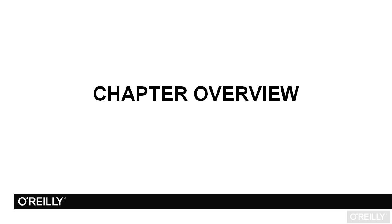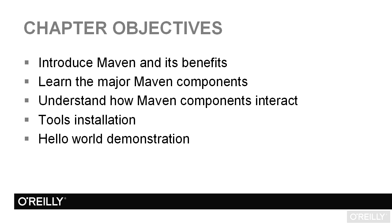Let's talk about what we're going to cover in this chapter. As you would expect, this is an introductory chapter to Maven, so we're going to be looking at some high-level concepts surrounding the tool. The first objective is to introduce Maven and discuss some of its benefits — covering what Maven can do for you and why you would want to use it, and hopefully giving you a good overview of whether Maven is right for you and your project.